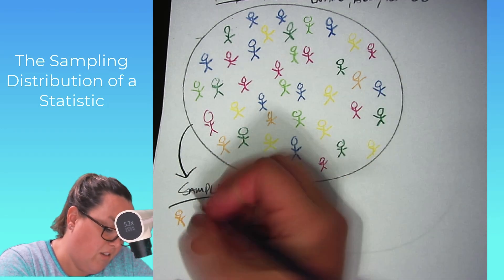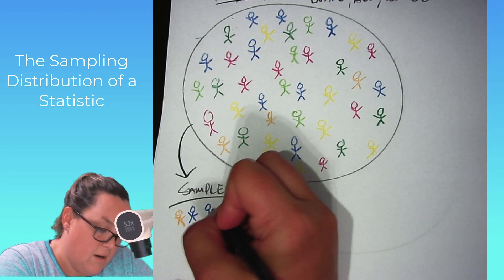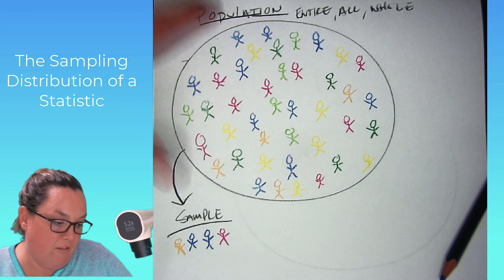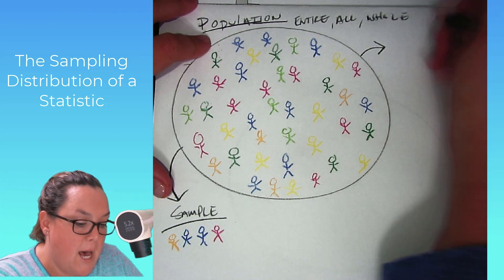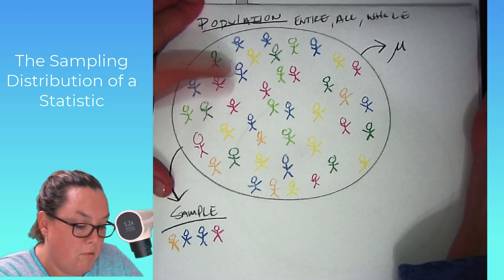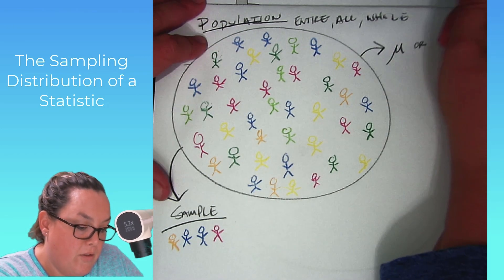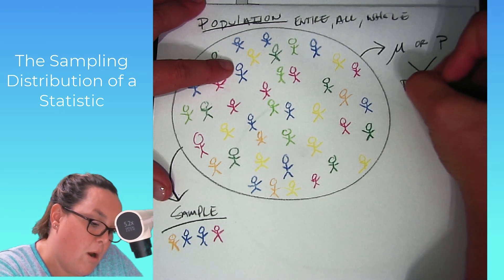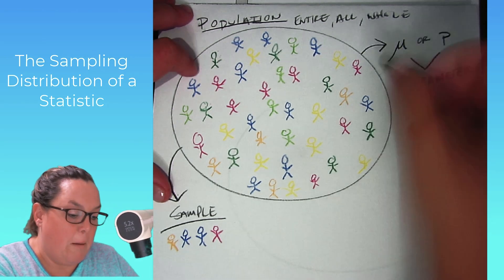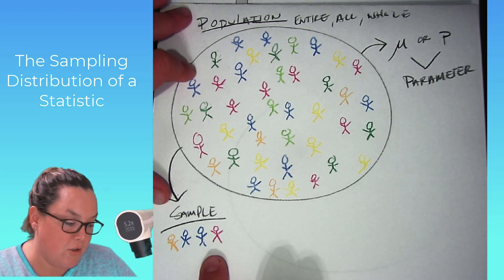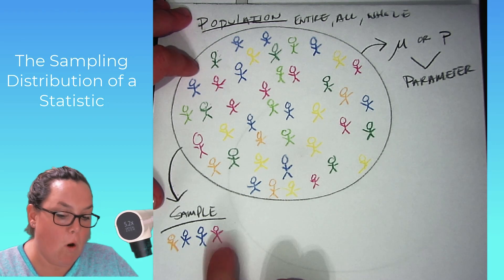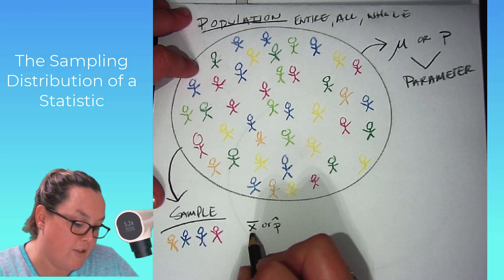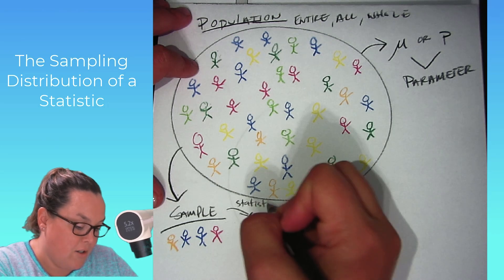Let's say I do some sampling method to pull from the population into a sample. So, I have maybe this group that I selected and this is my sample. When you have values referring to the population, those are called parameters. I could have the average height of my population or the proportion of people with brown eyes. These two values are called parameters and they describe this population.